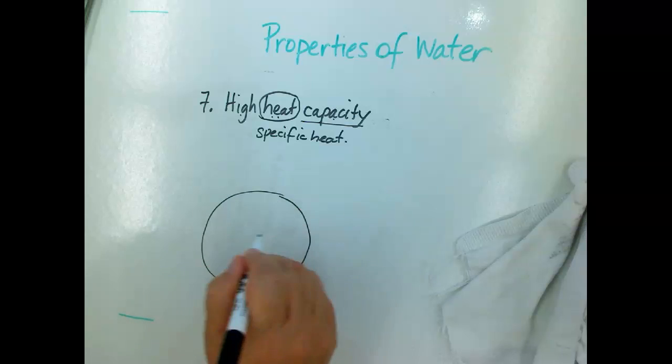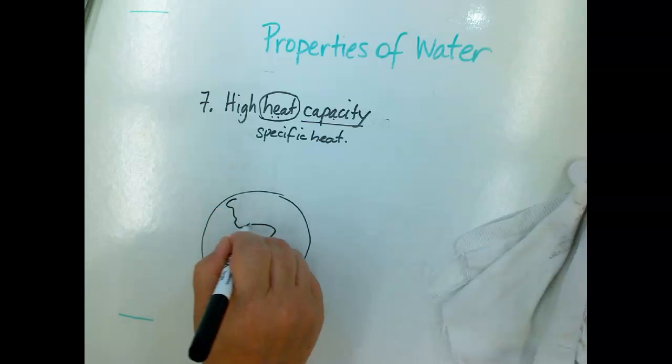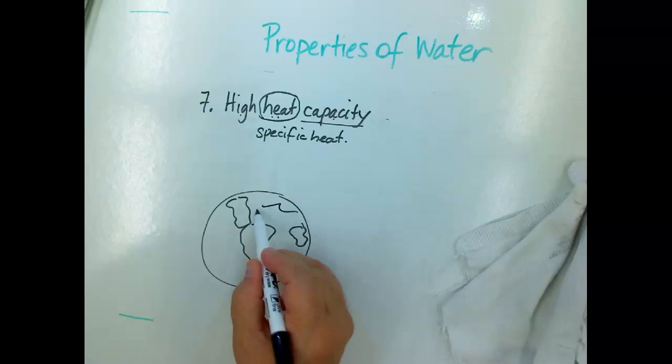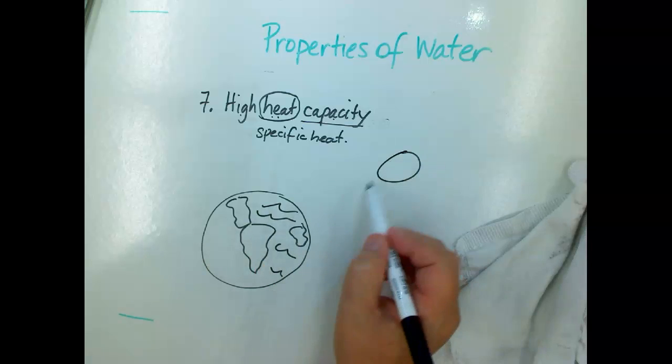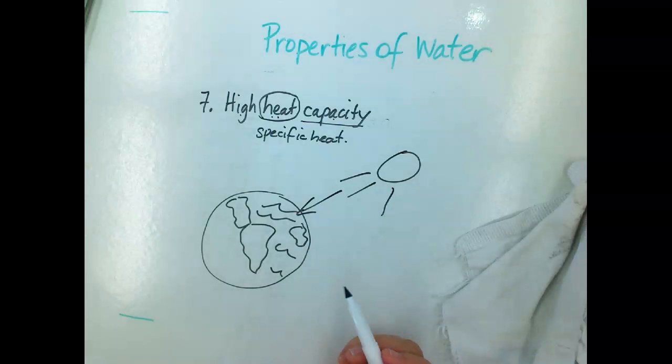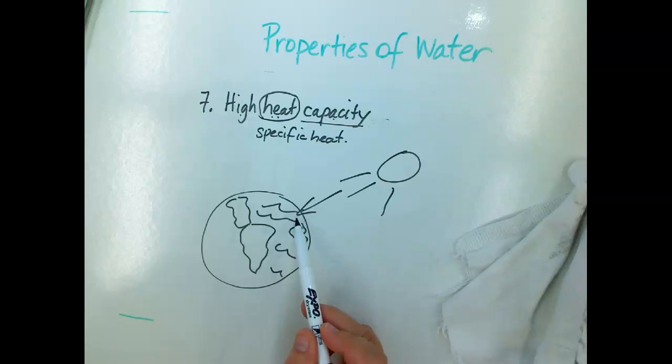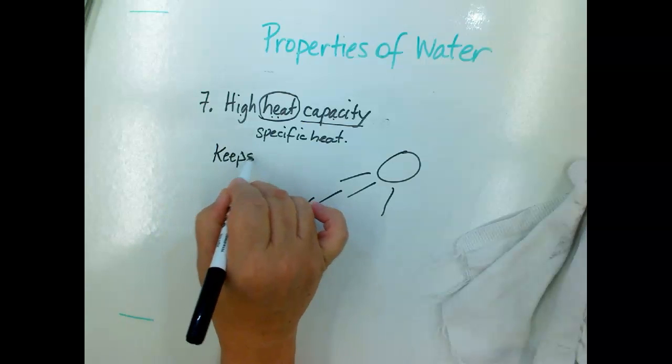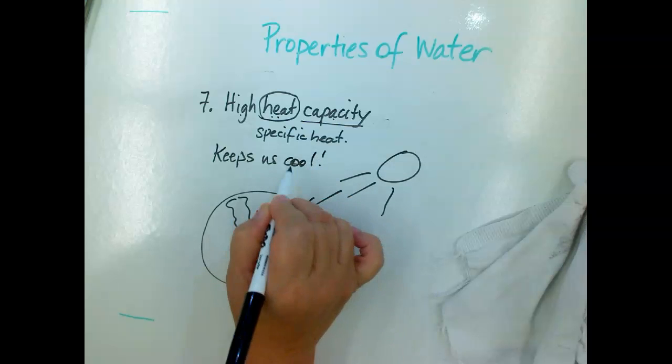This is really important for life on the planet because the planet is mostly covered in water, like two thirds covered in water. The sun is beating down on the planet 24-7. Even though you think it's not, it's always beating on the planet. If you think about the sun beating down on pavement, you can't even walk across the pavement sometimes because it gets so hot. But water actually can absorb a lot of that heat without getting too hot. And this is one of the main reasons why life can be sustained on our planet because we have water. Water allows to keep the planet cool.